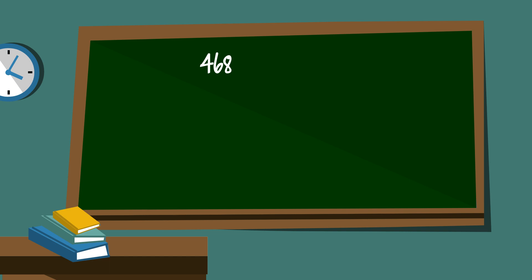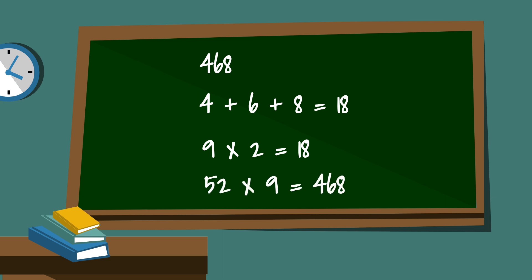Is 468 divisible by 9? Well, add the digits together: 4 plus 6 plus 8 is equal to 18. 9 times 2 is equal to 18, so 468 is divisible by 9.